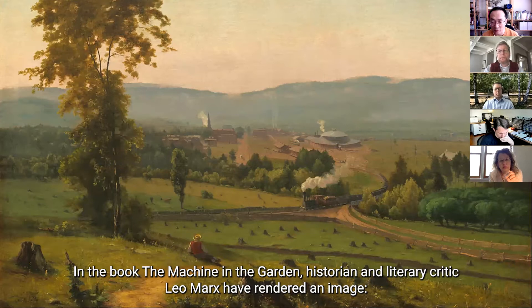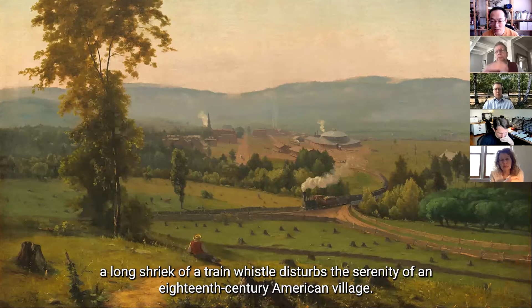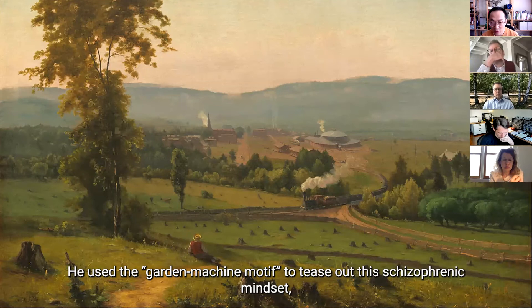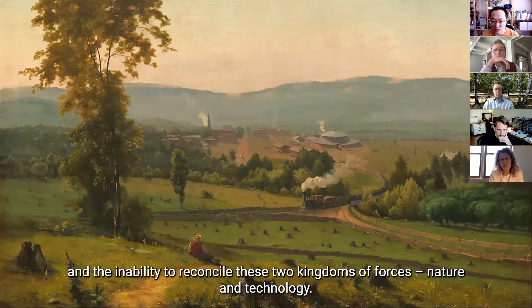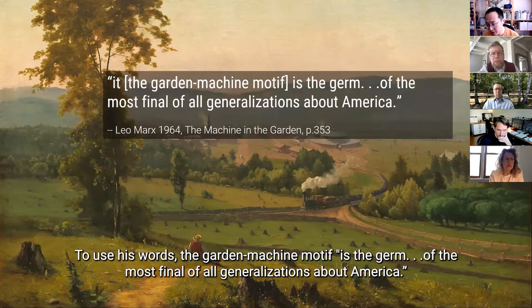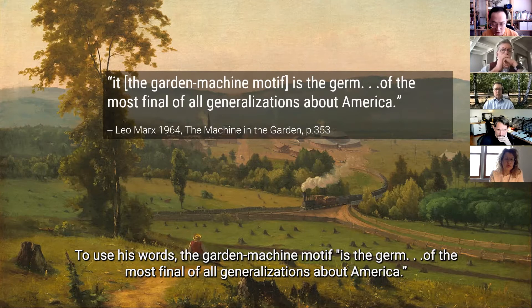And in fact, this is not a new idea. In a book, The Machine in the Garden, historian and literary critic Leo Marx have rendered an image. A long shriek of a train whistle disturbs the serenity of an 18th century American village. He used this term, garden machine motif, to tease out this kind of schizophrenic mindset and the inability to reconcile these two kingdoms of forces, nature and technology. And to use his words, the garden machine motif is the germ of the most final of all generalizations about America.